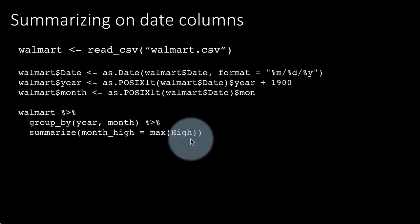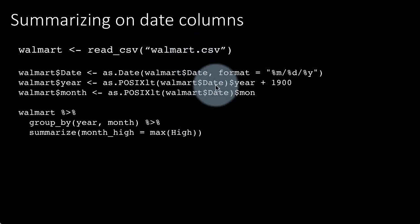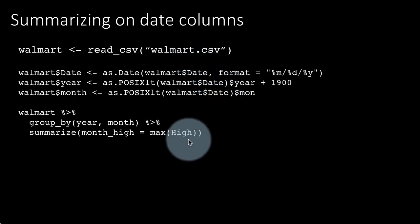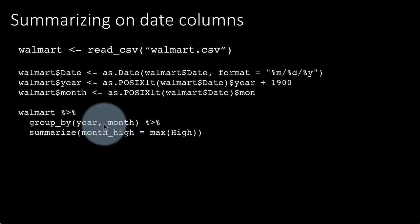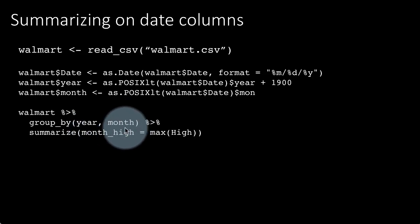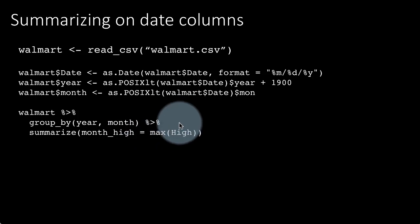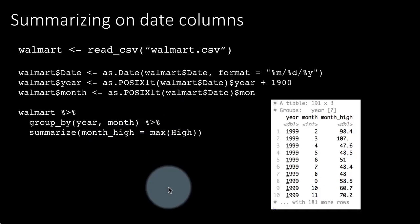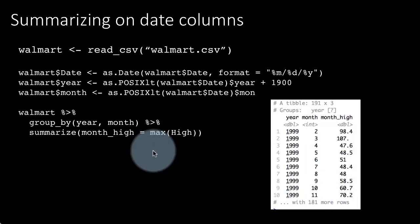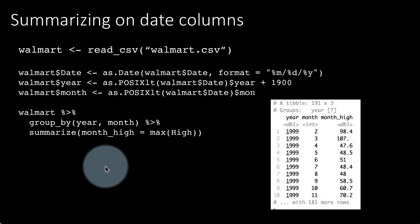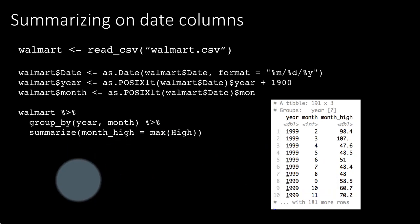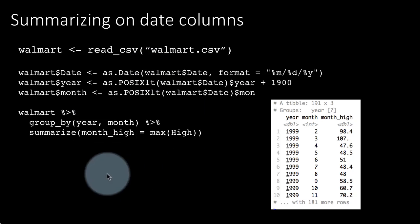To do that we group_by(year, month) and then summarize: month_high is max(high). Remember, high is a column in walmart.csv containing the high price for each day. So the high price for a month is the maximum of the high price for every day of that month. We've grouped by year and month, so all the days for a particular month form a group, and from that group we find the maximum high price. We can even pipe this further to ggplot and generate a plot of monthly highs.